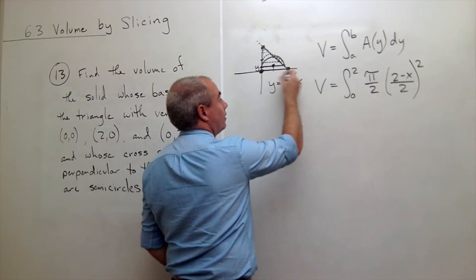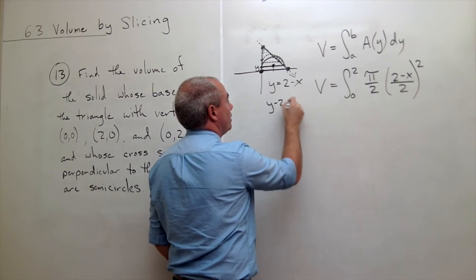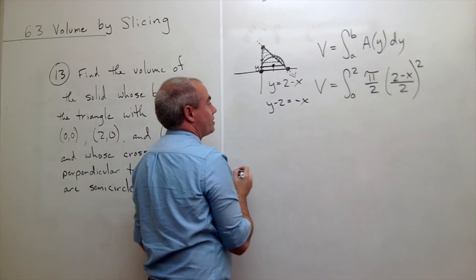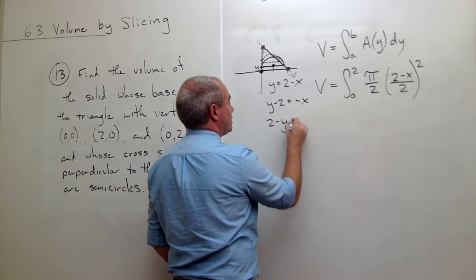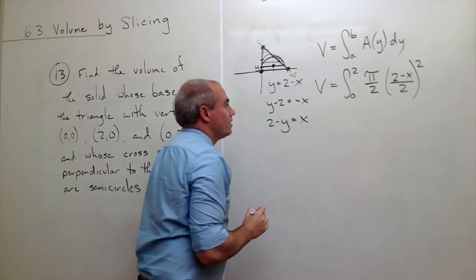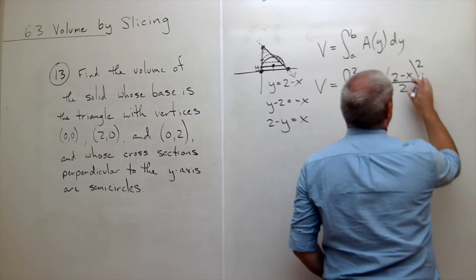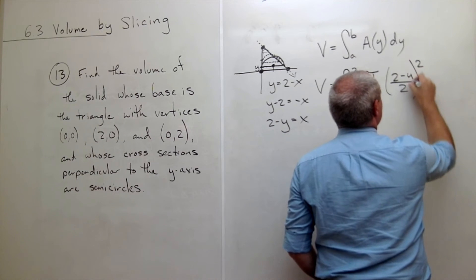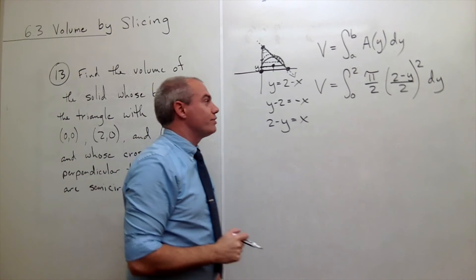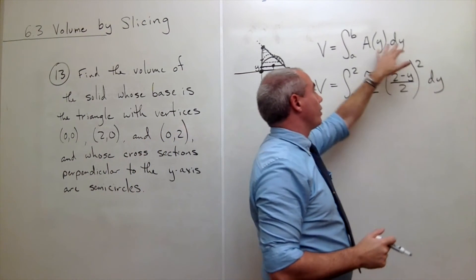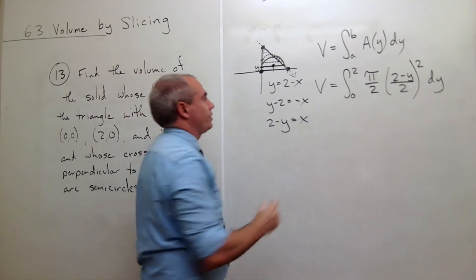If I do that I get y minus 2 is equal to negative x, and then I solve this for x and I get that 2 minus y is equal to x. So I don't want 2 minus x in here, I actually want 2 minus y. Everything would have worked out fine but that's by chance and not by skill. You definitely need y's in here when you're integrating with respect to y. And so now we've got an integral that will get the job done for us.